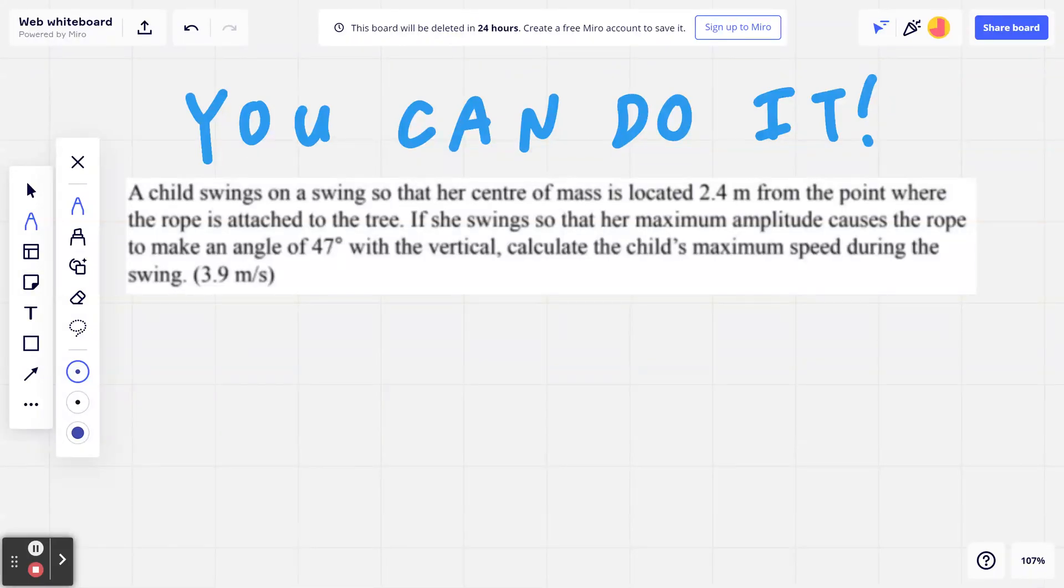Hi everyone, let's take a look at the following physics example. A child swings on a swing so that her center of mass is located 2.4 meters from the point where the rope is attached to the tree. If she swings so that her maximum amplitude causes the rope to make an angle of 47 degrees with the vertical, calculate the child's maximum speed during the swing.